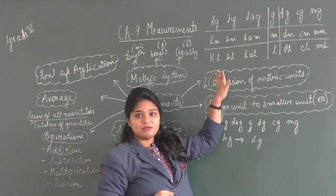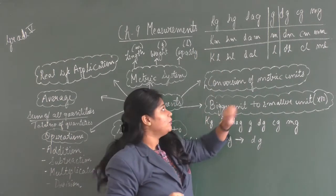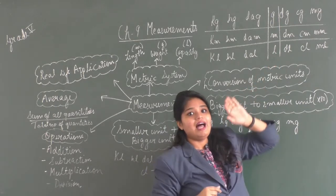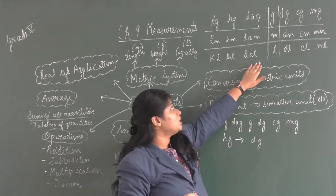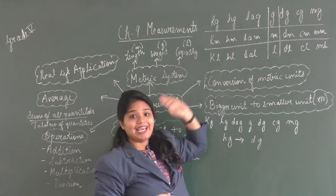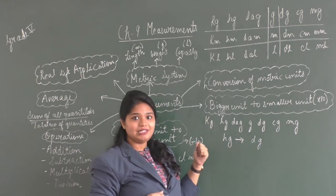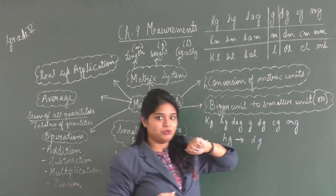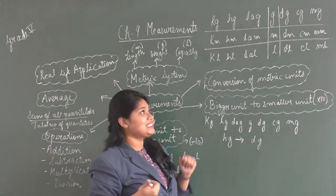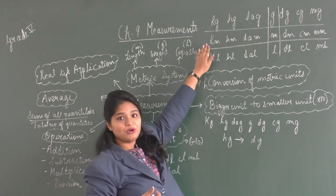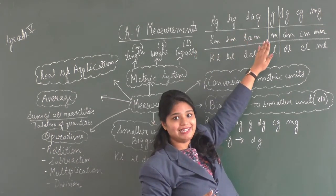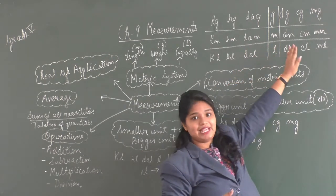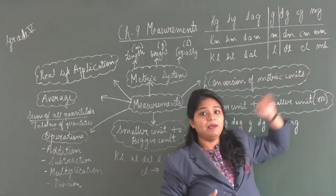This is what the metric system looks like. We write the standard unit in the center. All the units towards the right side of the standard unit are the greater units, and everything towards the left are the smaller units. So the metric system for weight reads as: kilogram, hectogram, decagram, gram, decigram, centigram, and milligram.